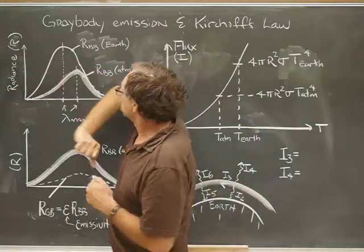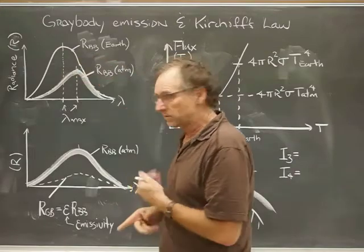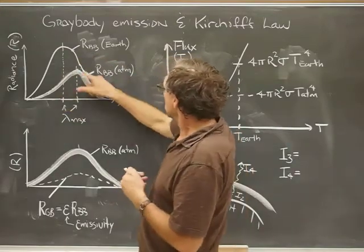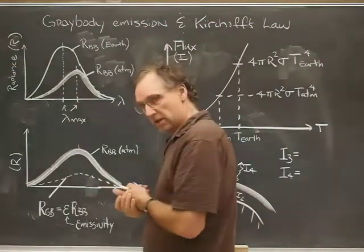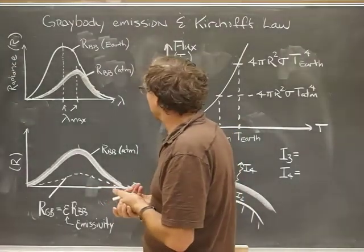We're using the symbol R for that, so that would be a black body curve, let's say, of the Earth. And this could be the black body curve of the atmosphere if the atmosphere was really thick and emitted like a black body.